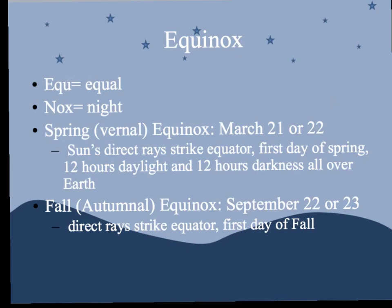Two of the four seasons relate to an equinox. The prefix 'equa' means equal, and 'nox' means night — so we have equal hours of daytime and nighttime. The two times this occurs are the spring or vernal equinox, around March 21st or 22nd, when the sun's rays directly strike the equator — marking the first day of spring with equal hours of daylight and darkness. The fall or autumnal equinox is around September 22nd or 23rd, with rays again striking the equator — the first day of fall, equal hours of daylight and darkness all over.